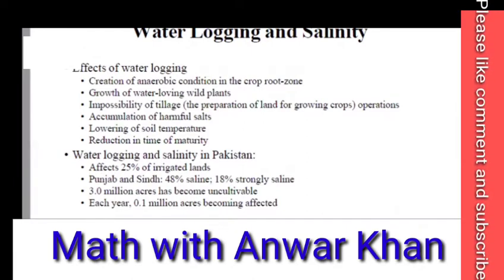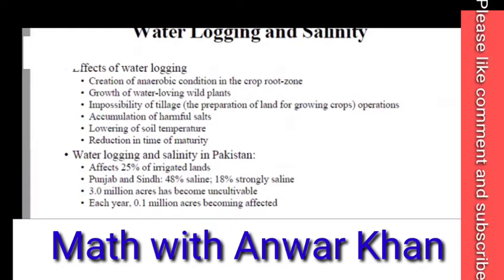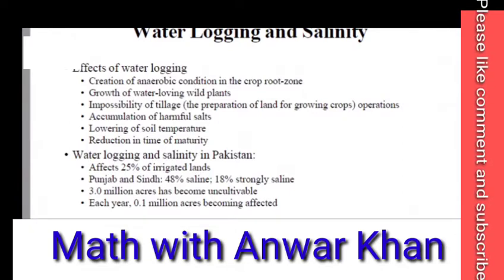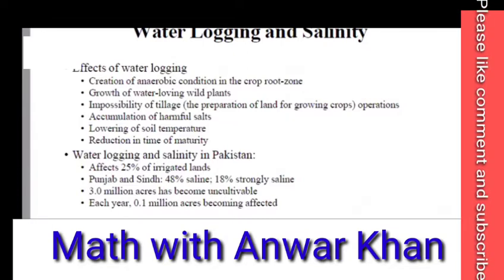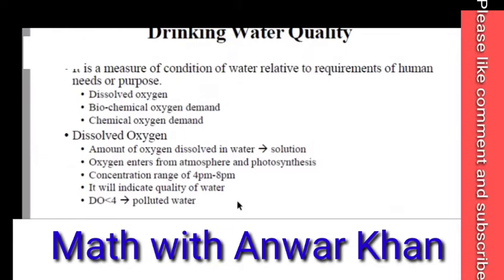There is a reduction in time of maturity — when crops mature, their yield is reduced. Now, how many areas are affected in Pakistan? 45% of irrigated lands are affected. In Punjab and Sindh, 48% have salinity, and 10% is at the strongest level. This means it is very severe — 3 million acres, that is 30 lakh acres, have become uncultivated because of this.